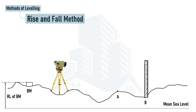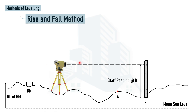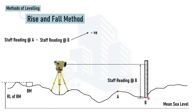For point B, the procedure is slightly different from the height of instrument method. Here, we look at the staff reading taken at the previous point — point A — and subtract the staff reading at point B. If the difference is negative, it means point B is lower than point A, which is the case in this sketch.